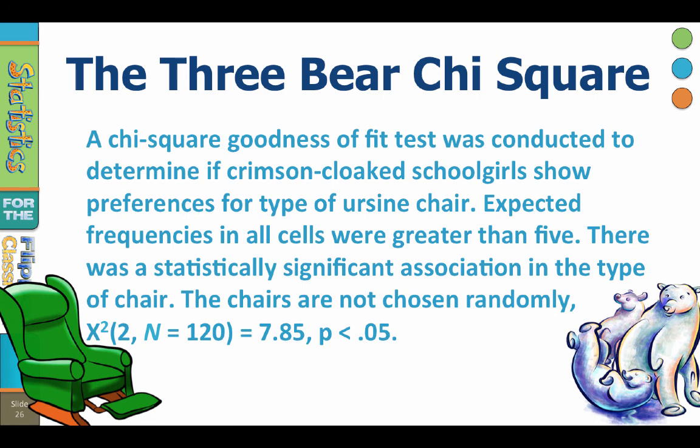And here is a sample APA write-up for our one-way chi-square goodness of fit test. A chi-square goodness of fit test was conducted to determine if crimson cloaked schoolgirls showed preferences for the type of ursine chair. Expected frequencies in all cells were greater than five. There was a statistically significant association in the type of chair. Chairs were not chosen randomly. Chi-square, two degrees of freedom, n of 120 equals 7.85, p less than 0.05.